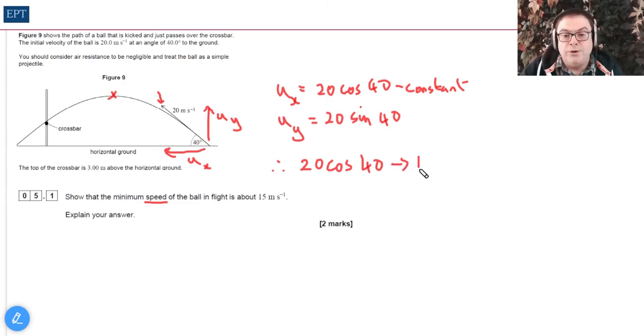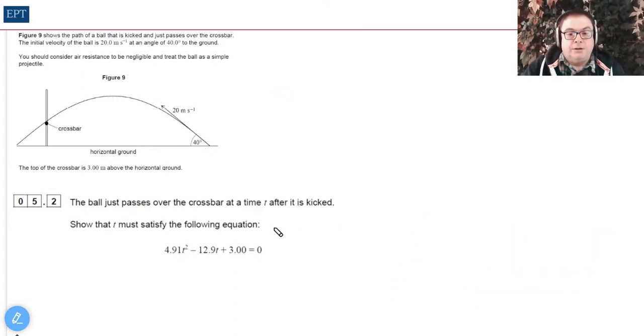In question 5.2, we are asked to show that the equation for t follows this pattern. As you can see it's a quadratic—we've got a t squared, we've got a t, and a constant. When quadratic equations come up in projectiles, you think of s = ut + ½at² in terms of t.